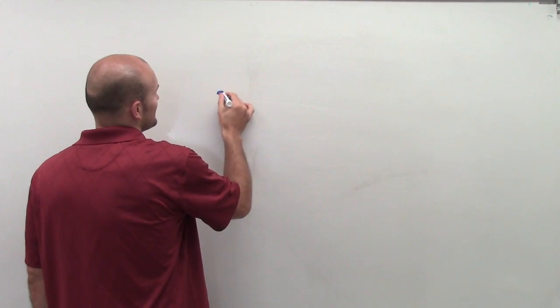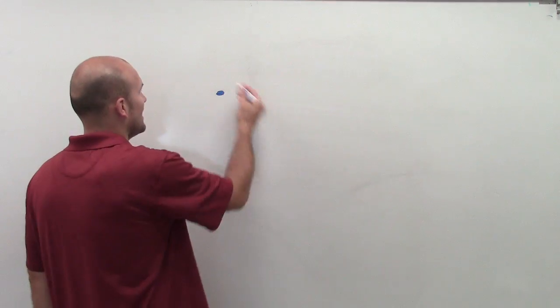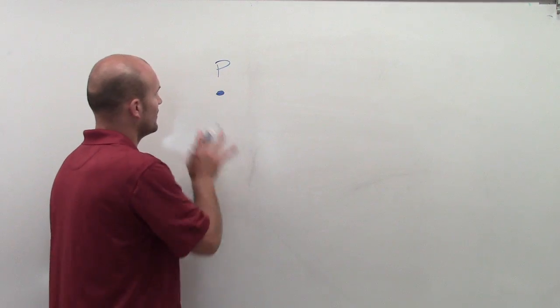So we talked about a point, right? A point has no size, but we draw a little dot for it. And we label it P. So it has no size.